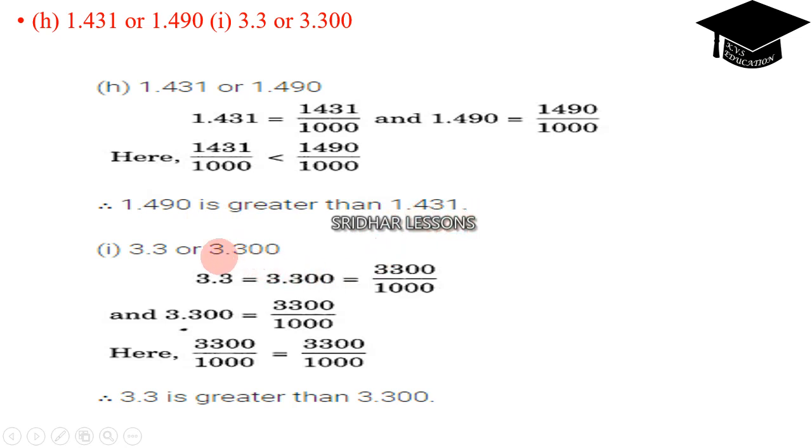Next, 3.3 or 3.300? I told you, because the last two digits are 0, both are equal. 3.3 is equal to 3.300, is equal to 3300 by 1000. So both are equal.